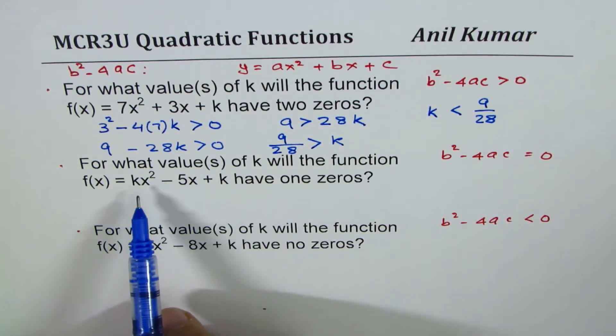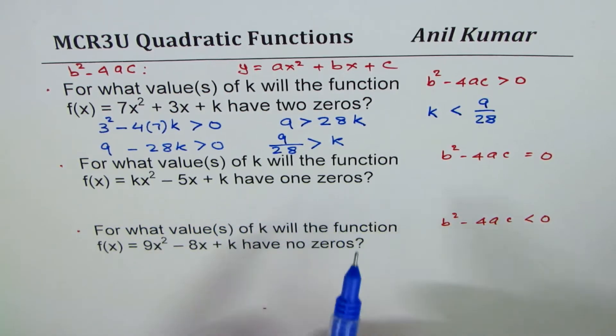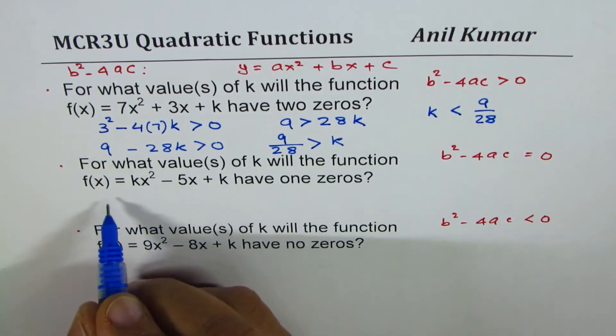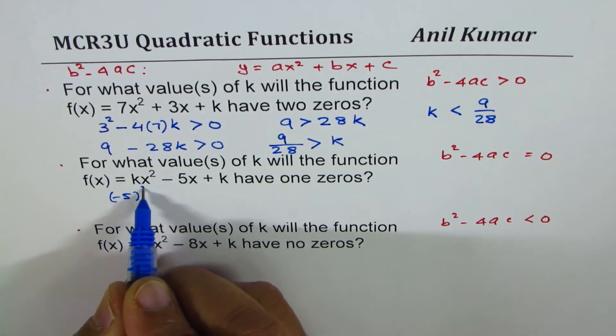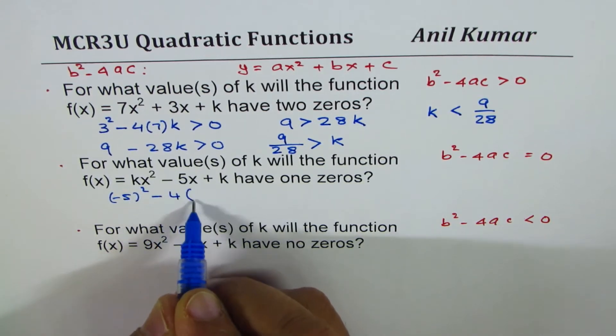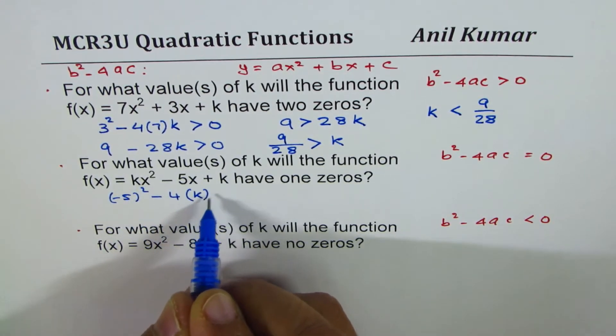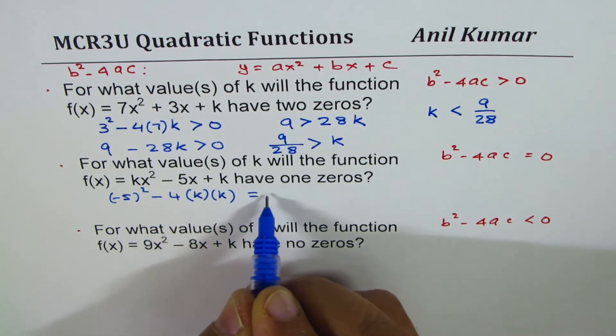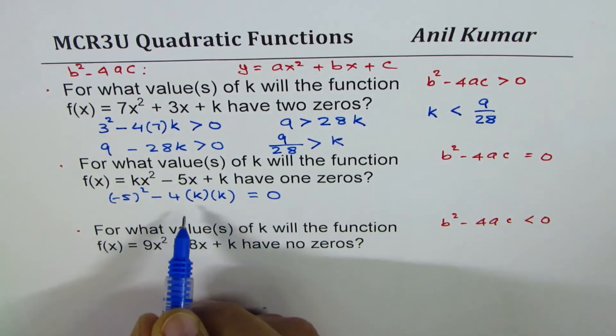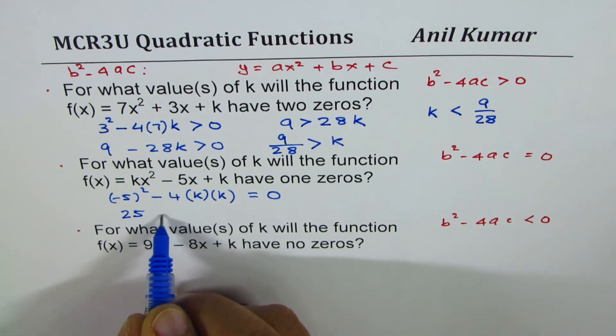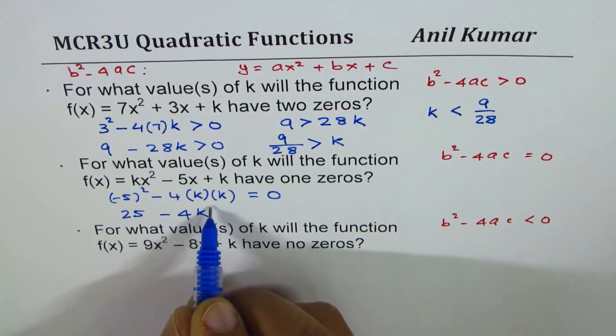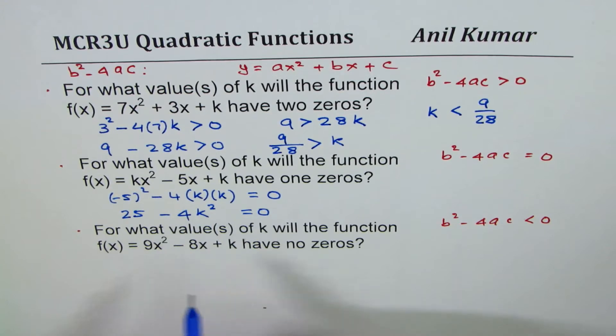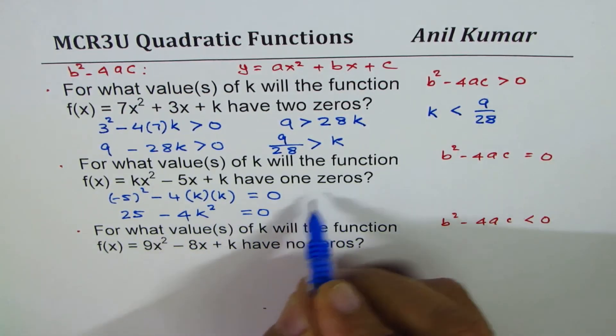Second question is for what values of k will this function have 1 zero? b² which means -5 squared minus 4 times a and c are k, that should be equal to zero. So that gives me 25 - 4k² equals to zero.